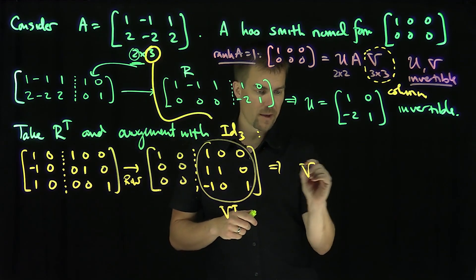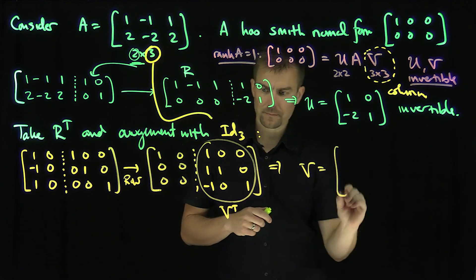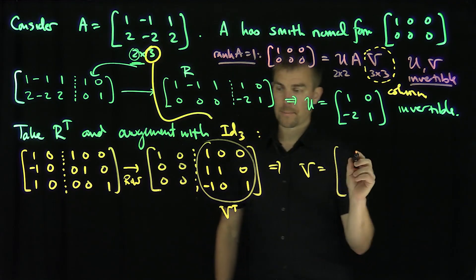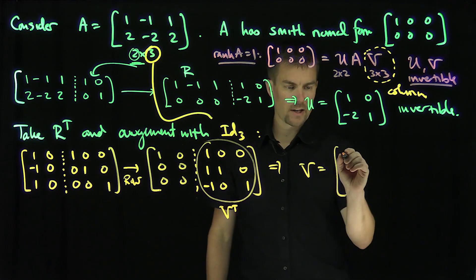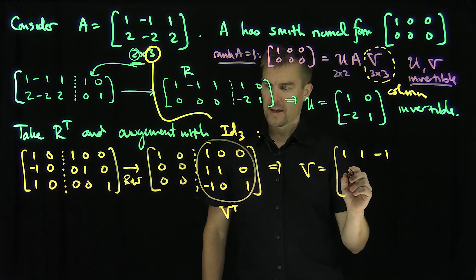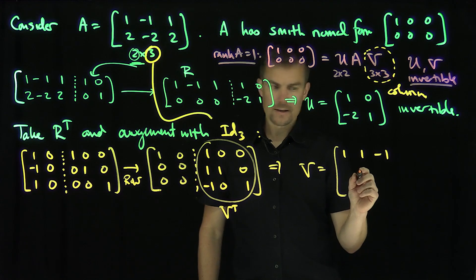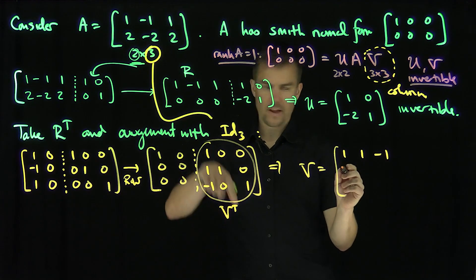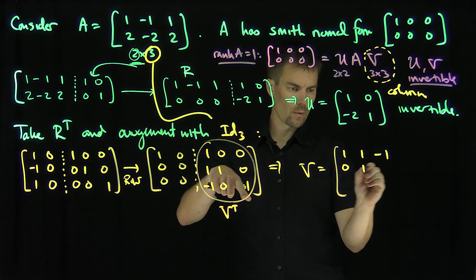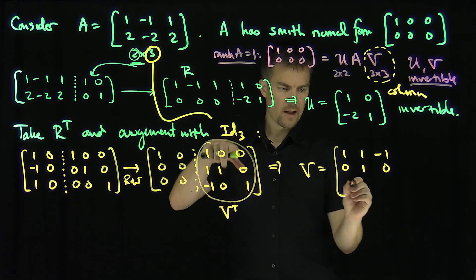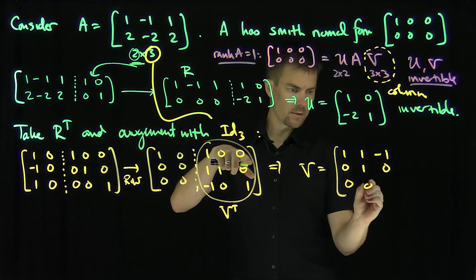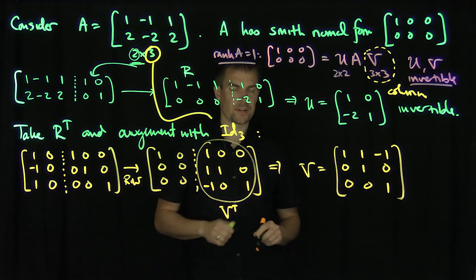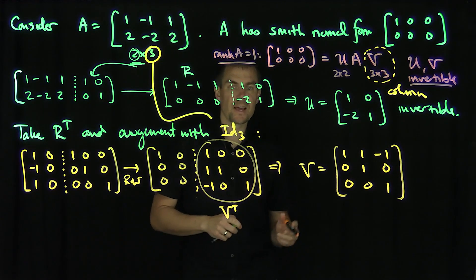Transposing the result gives me the matrix V = [[1, 1, -1], [0, 1, 0], [0, 0, 1]]. That's my V.